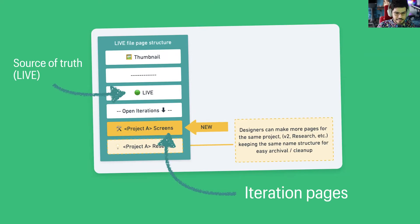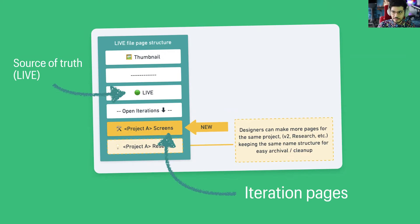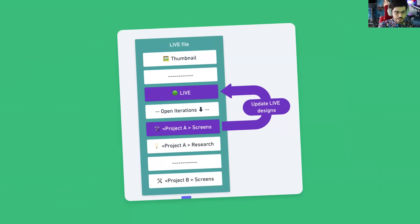The idea with this workflow would be: you have one file that represents what is live today and acts like a hub. If a designer wants to start a new project, they could create pages inside that file. That's a nice way because it could lead to serendipity — designers working in the same area finding out about projects that are also related, so they could talk about how to merge their initiatives. After the work is done, designers would go back to the page representing the source of truth and update those designs.